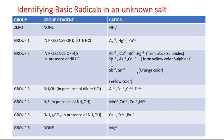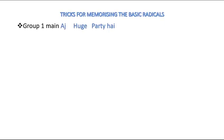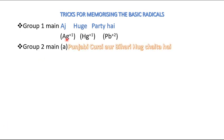Now let us go to some tricks to help memorize this. We know that in Group 1 we have Ag+1, Hg+1, and Pb2+. The trick is: Group 1 is a huge party. Remember that sentence — 'Group 1 is a huge party' — and you will remember these three ions: Ag, Hg, Pb.